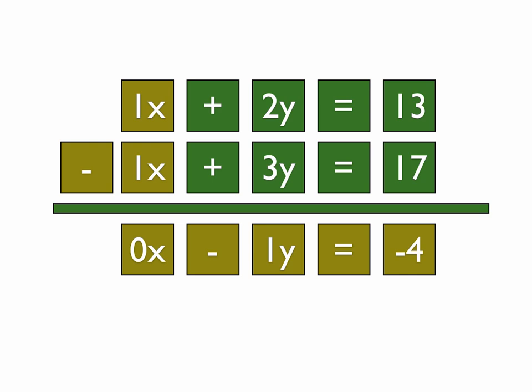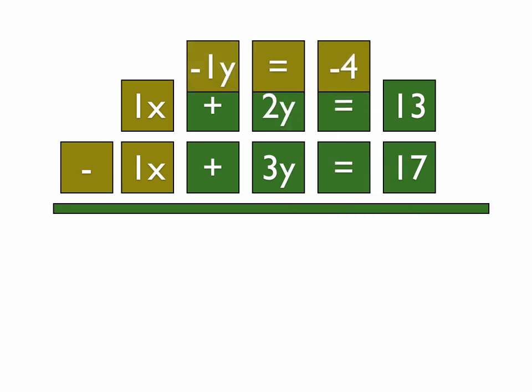So we've got it down to this point, and anything times 0 is 0. So 0x is going to equal 0, so we can get rid of that. Because it's just going to be 0 no matter what we do.